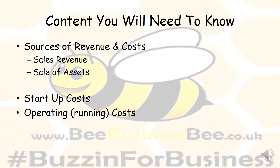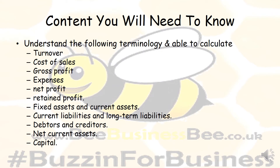You will need to understand where businesses get their revenue from and the types of costs they may have — including startup costs and operating or running costs, as well as revenue from sales and sales of assets. You'll also need to understand and be able to calculate: turnover, cost of sales, gross profit, expenses, net profit, retained profit, fixed assets and current assets, current liabilities and long-term liabilities, debtors and creditors, net current assets and capital.